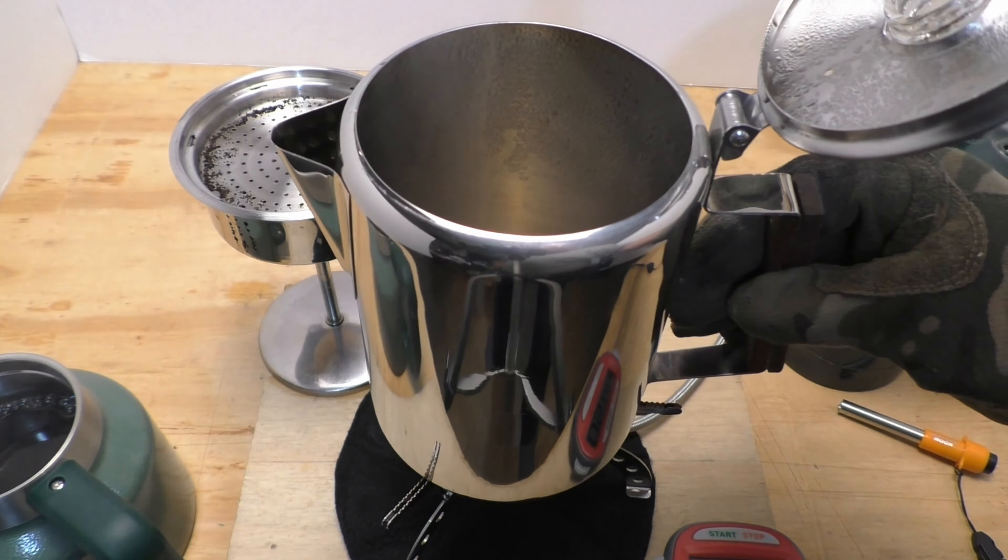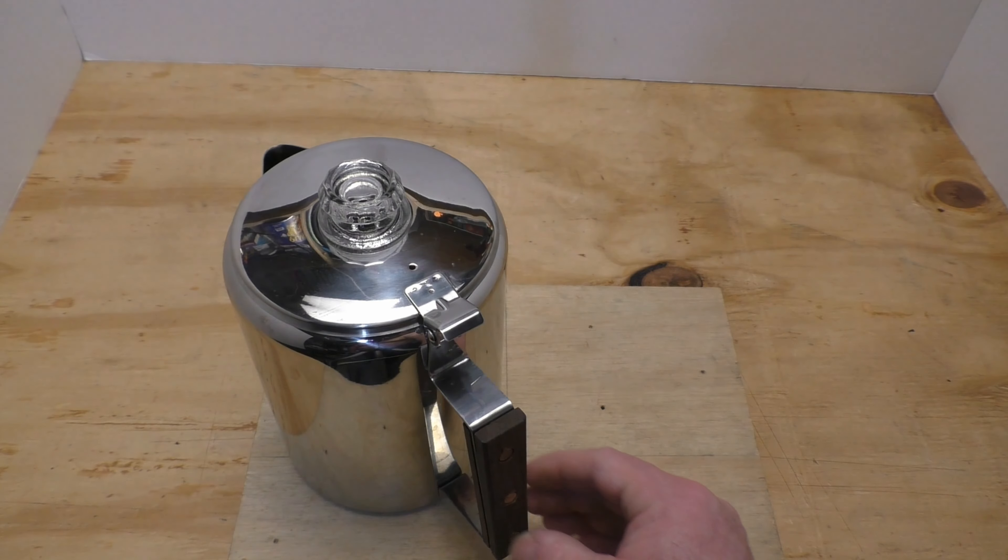One thing I did notice while washing it is this handle right here, this whole wood handle, both sides, absorbs water. Now, I think this wood was lightly oil-treated, but that's not preventing it from absorbing water. In fact, feeling it right now, I can tell that that's absorbed some moisture for sure.